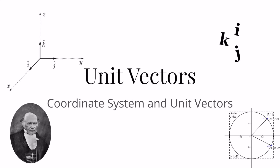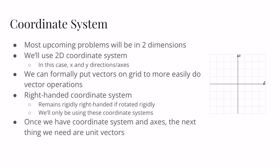Let's get right into it. We're going to start off by defining what we call a coordinate system. In physics, most problems we'll be dealing with will be in two dimensions for right now — we'll move on into three dimensions later. We're going to define a 2D coordinate system using the x and y axes as our directions. We can also formally put vectors onto a grid to more easily do vector operations — think of them as just an arrow starting arbitrarily from anywhere on the coordinate system.